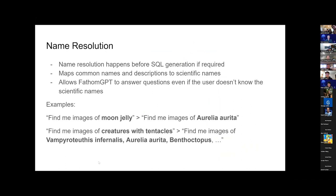Let me talk about the name resolution step. If it's required, it will happen before the SQL generation step. If the prompt only has a common name or description, it needs to map that to a list of scientific names. This allows users to fetch images or answer questions even if they don't know the scientific name. For example, if the prompt has a description, it will resolve that to a list of scientific names that match that description.